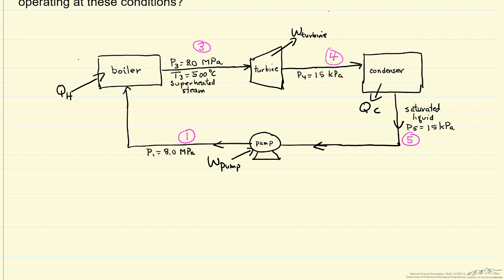Now what we want to do to calculate efficiency is we want to know the work, the network generated, and the heat added. Network is two places: we generate work from the turbine, but we use up a small amount in the pump, and the heat generated is in the boiler. So the equation that we're interested in is determining the efficiency, and this is the net shaft work. We put an absolute value sign because the efficiency is positive.